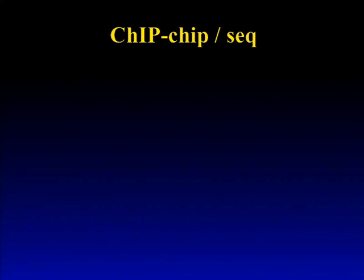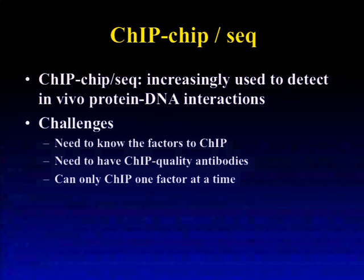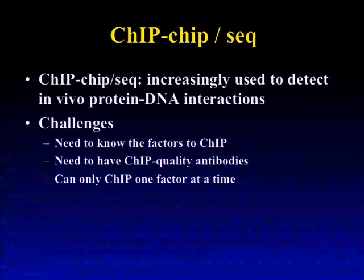ChIP and ChIP-seq has been widely used to detect in vivo protein-DNA interactions at genome scale, but there are challenges that prevented ChIP-seq from being widely adopted for every factor. First, you have to know in a cell condition which factors are interesting and worth chipping. Second, the factor you are interested in must have a very good quality antibody. And third, even if you have those first two, if there are multiple factors of interest, you have to chip them one at a time.